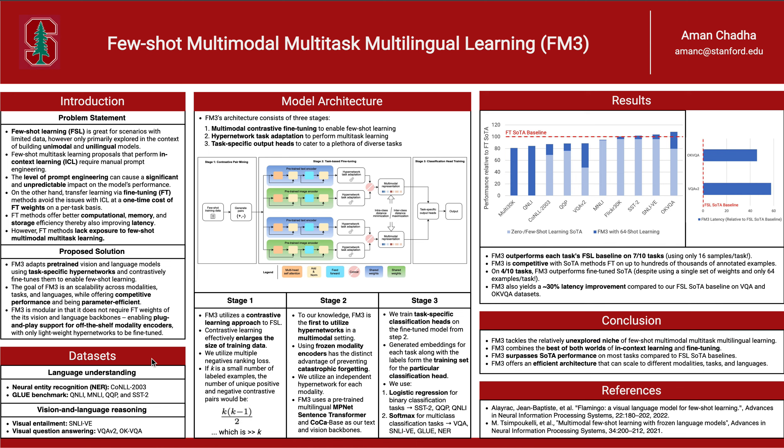Let's talk about datasets next. FM3 has been fine-tuned on a total of 10 tasks broadly split into two categories. First, language understanding tasks, such as named entity recognition and the standard GLUE benchmark. Second, vision and language reasoning tasks, such as visual entailment and two visual question-answering datasets, namely VQA-V2 and its more challenging cousin, OKVQA.